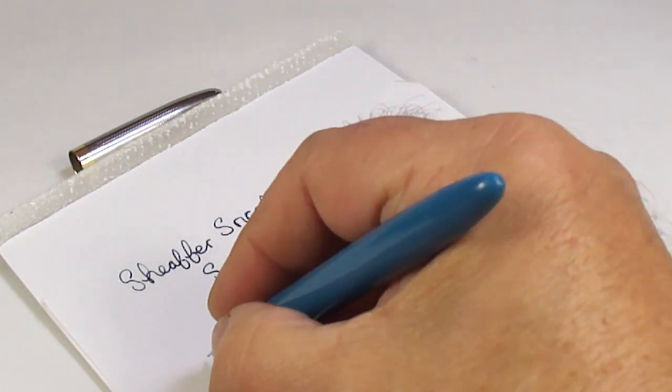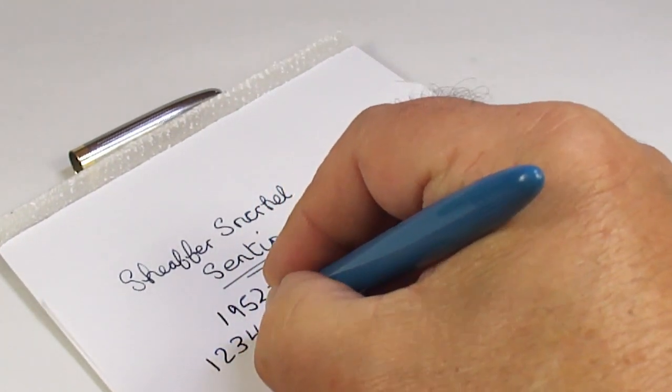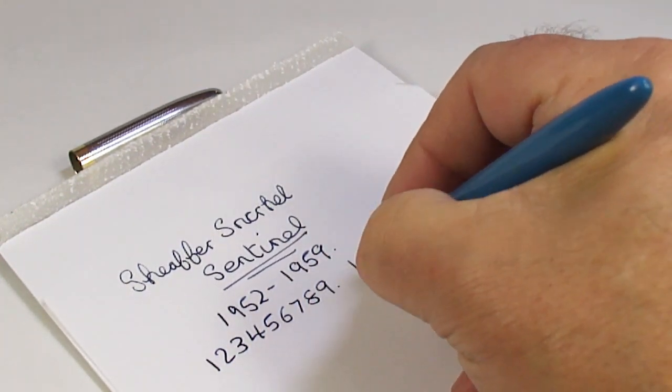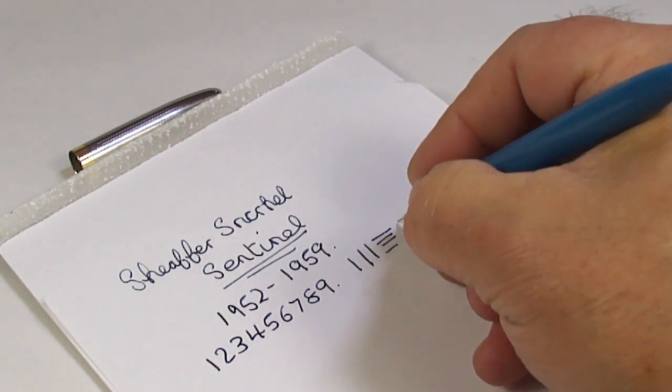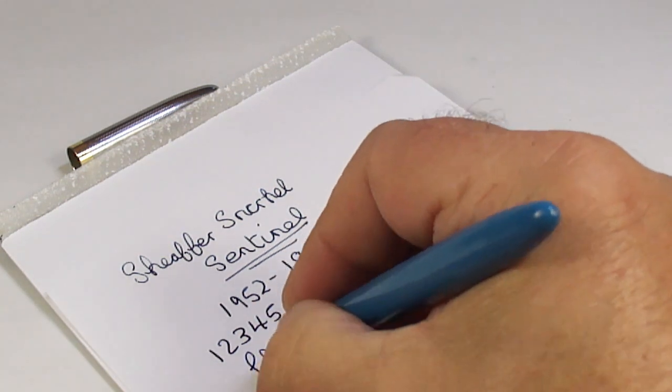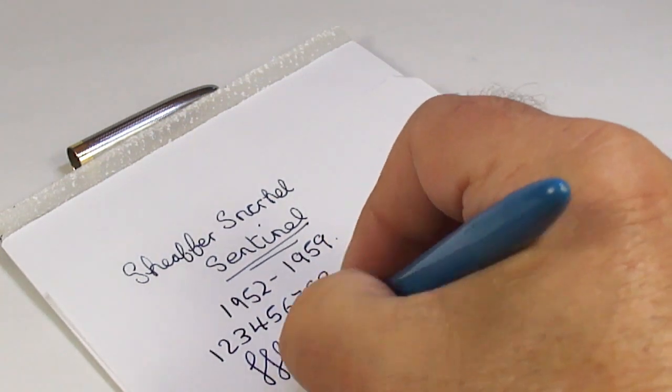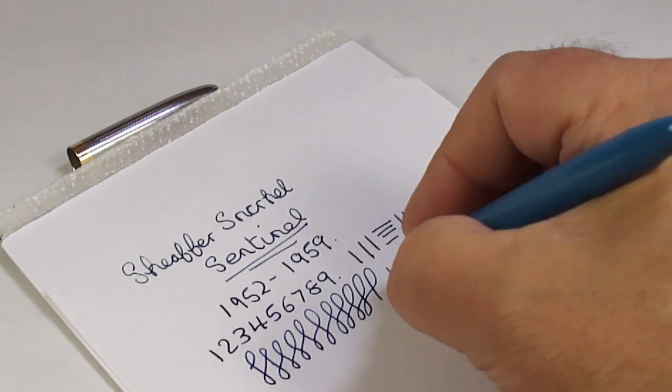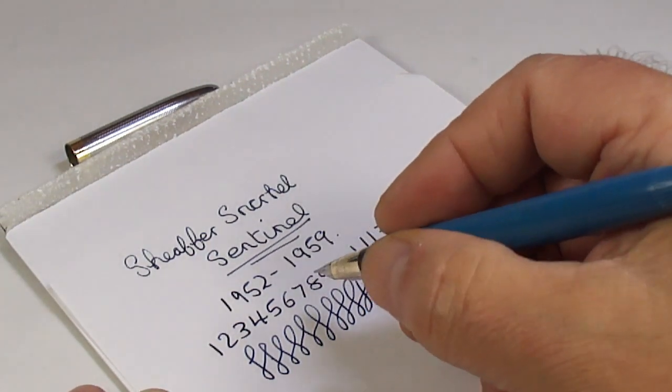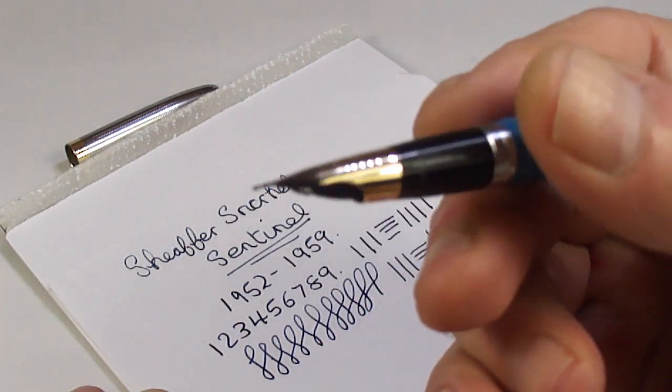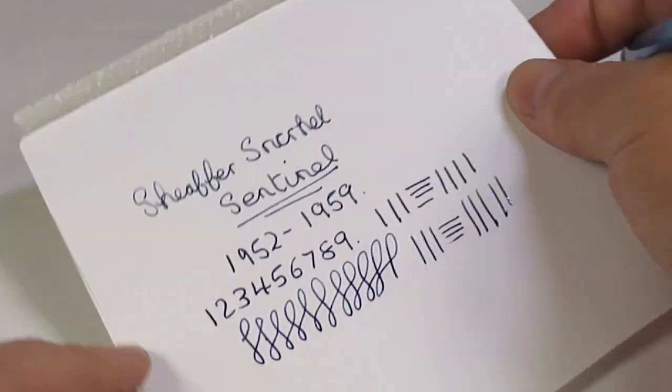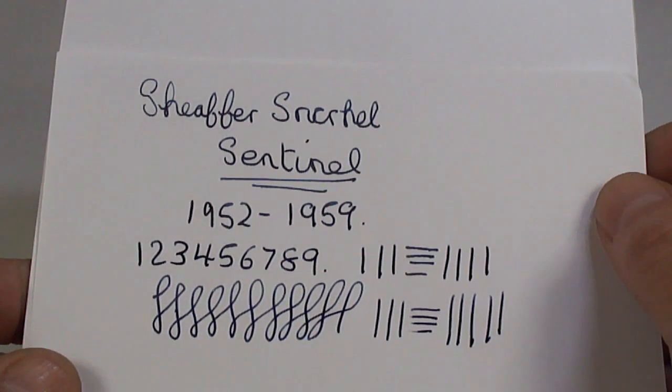Okay, so let's carry on with our writing sample. It's actually writing very nicely. Writing, I would say, with maybe a fine, a fine line. Maybe medium. But writing very nicely indeed, as you can see here. There's no flex in these nibs. They're quite a hard nib, but a lovely, lovely writer. So there's a writing sample.